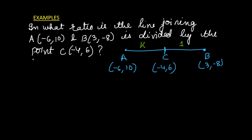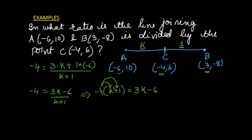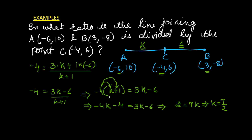According to the section formula, the x-coordinate of point C equals -4. So: -4 = (k × 3 + 1 × (-6)) / (k + 1), which gives -4 = (3k - 6) / (k + 1). Cross-multiplying: -4(k + 1) = 3k - 6. Distributing: -4k - 4 = 3k - 6. On transposition we get 2 = 7k, so k = 7/2.